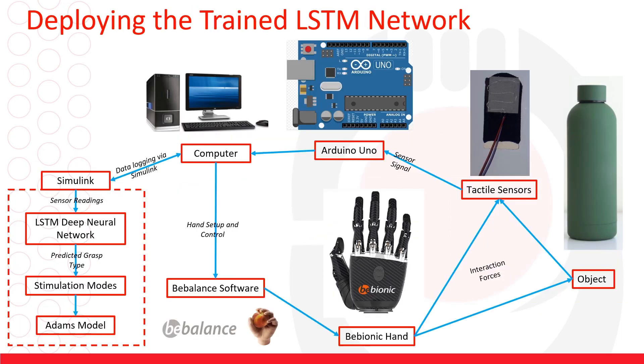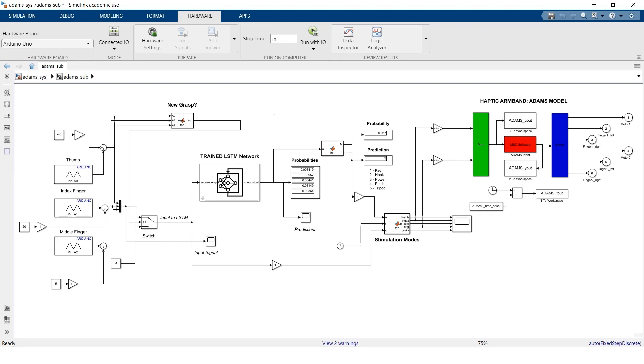With the network trained the next stage is to deploy the trained network using real-time input and we produce a real-time output to an Adams model of the haptic feedback device. This is the structure of the Simulink model that we're using.